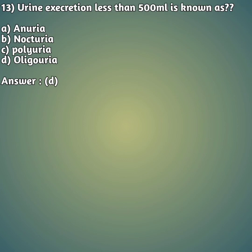Thirteenth question: urine excretion less than 500 ml is known as — option A: anuria, option B: nocturia, option C: polyuria, option D: oliguria. If urine volume is less than 500 ml, that condition is termed option D — oliguria.